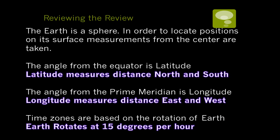To review: Earth is a sphere. To locate positions, we take measurements from the center. Angles from the equator are latitude. Angle from the prime meridian is longitude. And time zones are based on the rotation of the Earth. You might want to pause this and make sure you have this information in your notes.